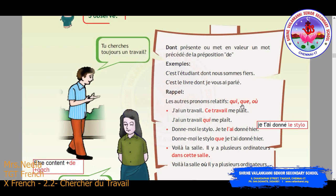The first one is 'ki'. Follow the sentence: 'jay aan trawai, sa trawai maple.' The word 'trawai' is repeated and it is in the subject of the second sentence, so it will be replaced by the pronoun relative 'ki'. Now see the sentence 'jay aan trawai' — instead of 'sa trawai' we are replacing that by 'ki maple'. This 'ki' introduces the subordinate clause which gives more information about 'trawai', so: 'jay aan trawai ki maple'. So 'ki' is followed by the verb and the pronoun complement. We already saw that in detail in the previous video.